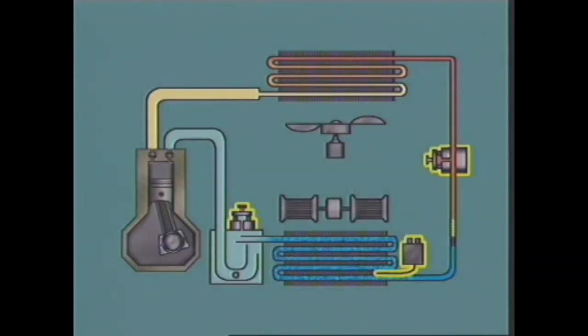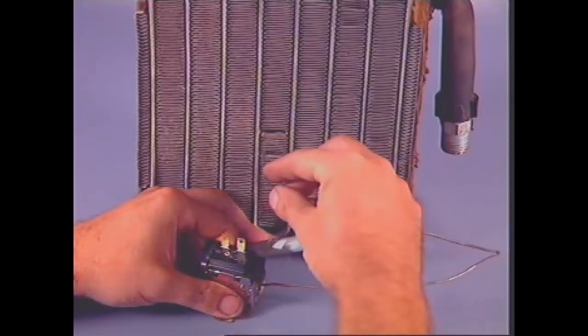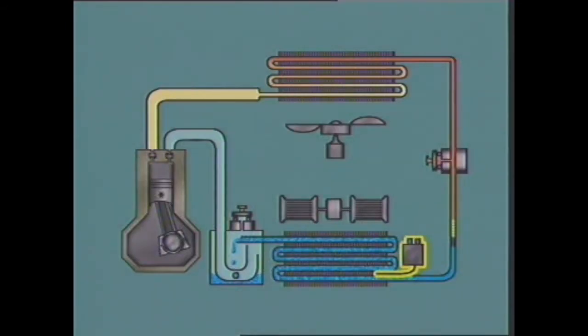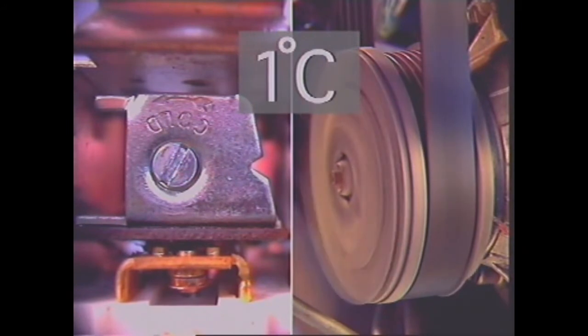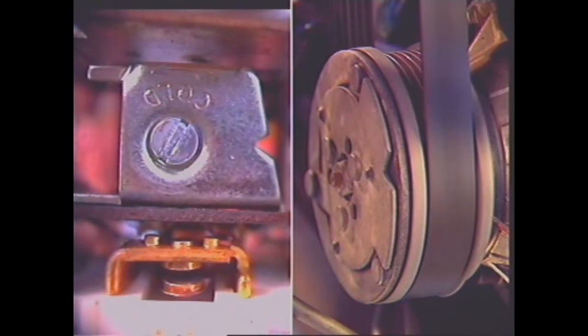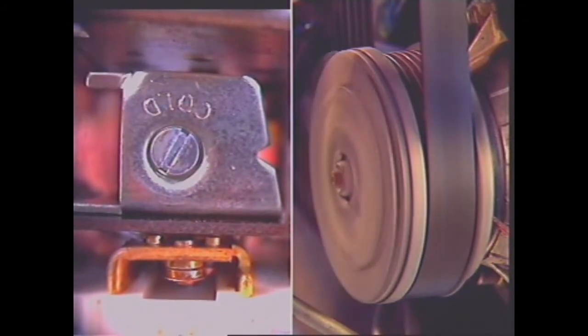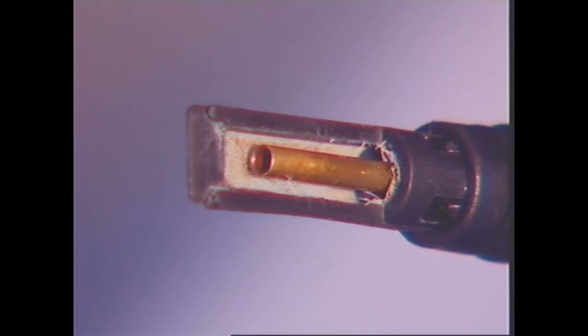Control devices are fitted to ensure maximum efficiency and protect components from damage. A thermostat senses the temperature of the evaporator fins and ensures they do not drop below one degree Celsius — if the fins dropped to zero degrees Celsius or less, moisture condensing from the air would freeze on the unit and block airflow. When the fins drop to one degree Celsius, the thermostat contacts open, breaking the electrical circuit to the compressor clutch and stopping the compressor. When the evaporator temperature rises to about four degrees Celsius, the contacts close and the compressor clutch circuit is restored.